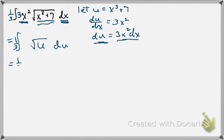First thing we're going to want to do here is rewrite it as a power function. So u to the 1 half du. And now we can take our anti-derivative.